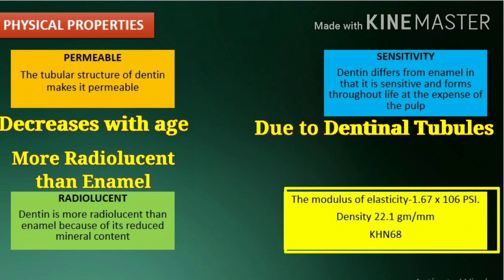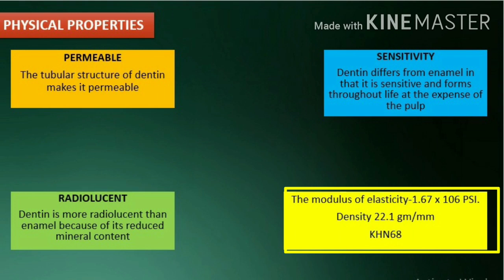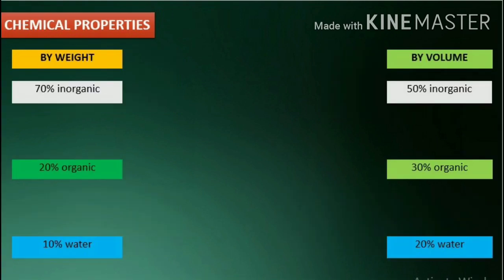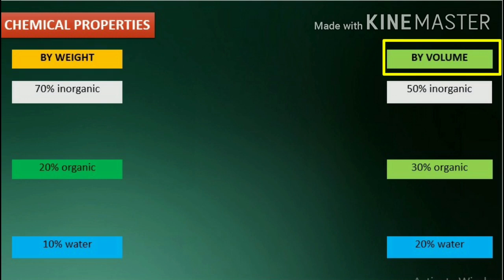Dentin has a density of 22.1 gram per milliliter and its Knoop hardness number is 68. Chemical properties. Dentin is made up of approximately 70% inorganic material, 20% organic material and 10% water by weight; and 50% inorganic material, 30% organic material and 20% water by volume.